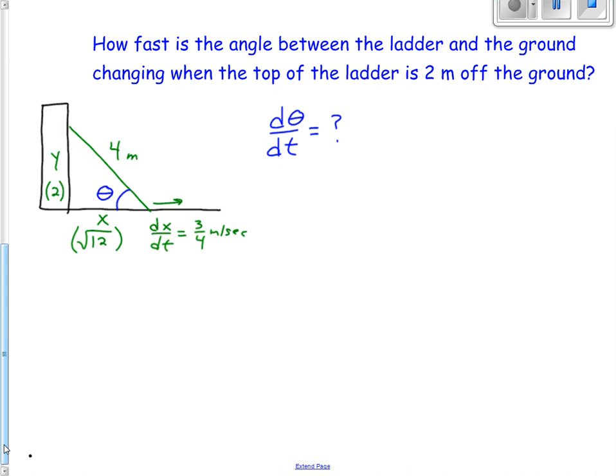What they want us to find is how fast this angle is changing. Let's call that angle theta, and we need to write an equation for that. It wants to know how fast theta is changing with respect to time, dθ/dt. Let's come up with an equation for this. There's several we can use, right triangle trig - sine, cosine, or tangent. I think I'd like to use the cosine. Cosine of theta would be x over 4, adjacent over hypotenuse. I'm going to rewrite this as θ = arccos(x/4).